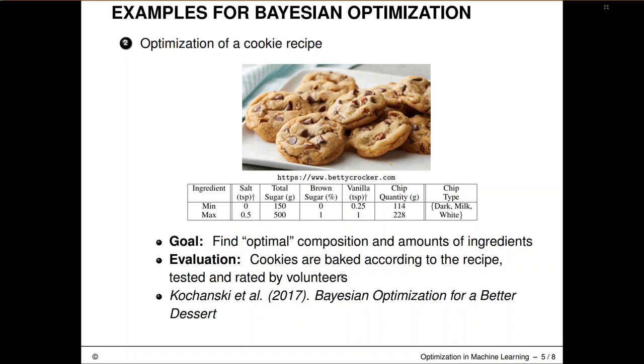Hopefully there's much more sugar than salt. Maybe not too much, so they don't become overly sweet and unhealthy. Now the chip quantity, the chocolate chips, of course, there should be lots of chocolate chips in the cookie. At least to make them appealing to me, what type of chocolate and so on.